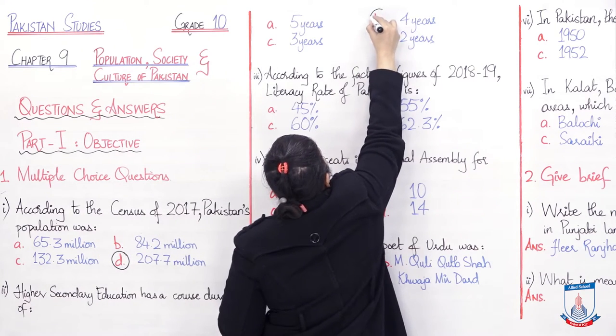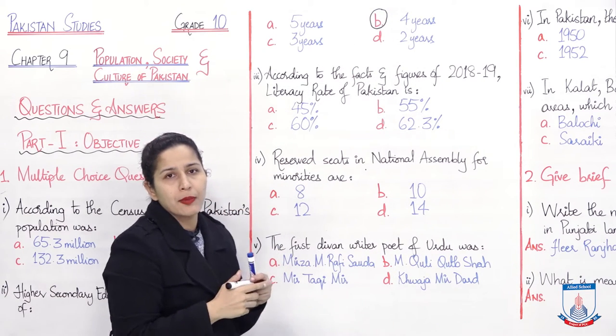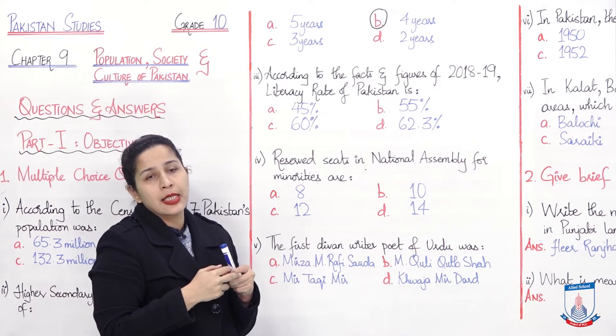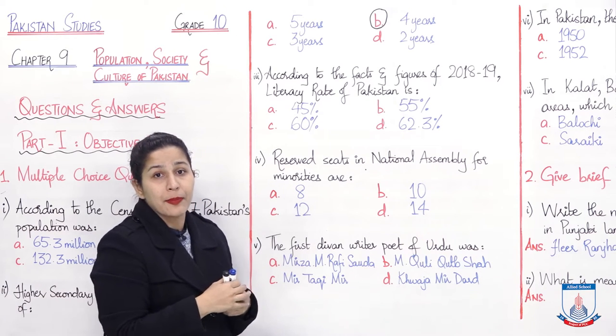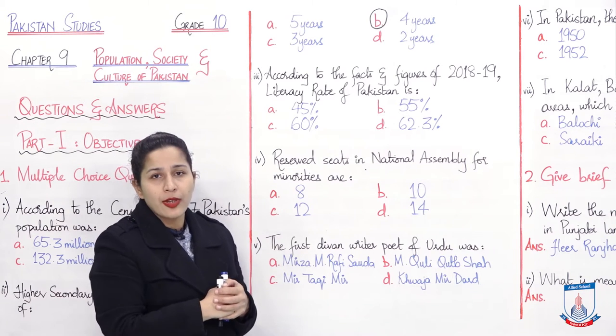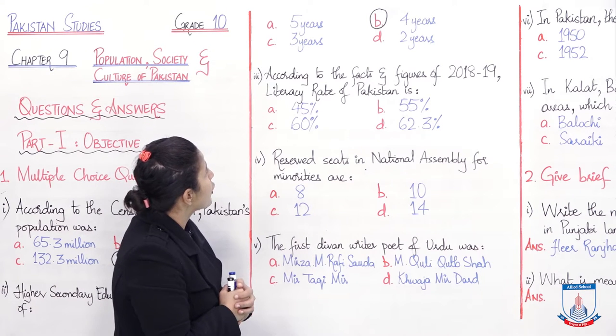University education is supposed to be four years, in which you get different degrees like Bachelors - BA, BSc, Bachelors of Arts, Bachelors of Sciences, then MA Masters in Arts, MSc Masters in Sciences, then PhD which is a doctorate degree. The university education can continue but generally the bachelor's level is a four years program.